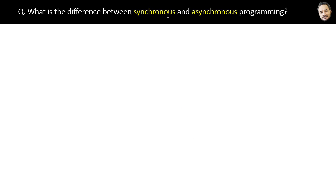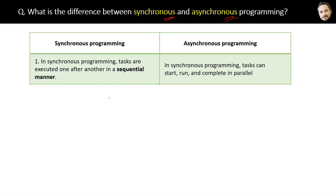What is the difference between synchronous and asynchronous programming? In synchronous programming, tasks are executed one after another in a sequential manner, whereas in asynchronous programming, tasks can start, run, and complete in parallel or concurrently.